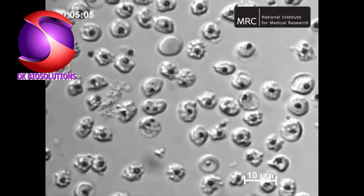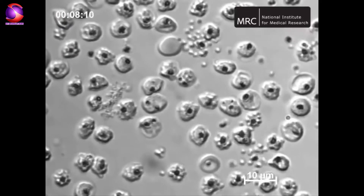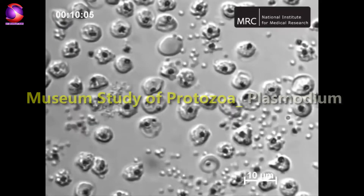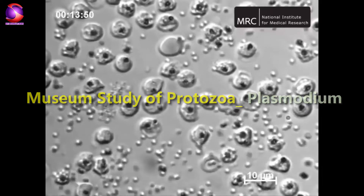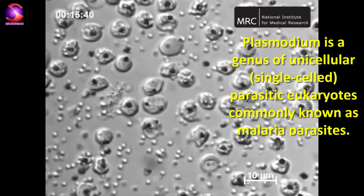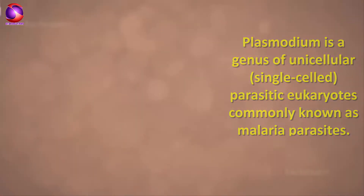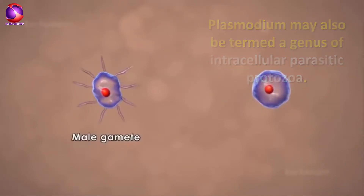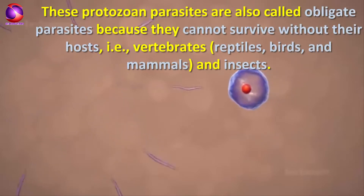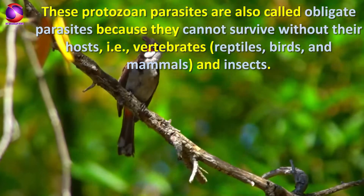Welcome back to our YouTube channel DK Biosolutions. In the previous video we learned about Euglena, Paramecium, and Amoeba. In this video we will learn about protozoan animals from the genus Plasmodium. Plasmodium is a genus of unicellular, single-celled parasitic eukaryotes commonly known as malaria parasites, and may also be termed a genus of intracellular parasitic protozoa. These protozoan parasites are also called obligate parasites because they cannot survive without their hosts — that is, vertebrates like reptiles, birds,